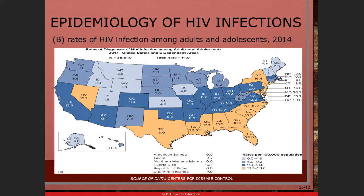Data showing the rate of HIV infections among adults in 2014 in the United States indicates that larger cities generally have a higher infection rate.